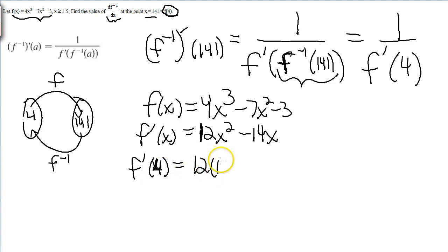12 times 16 minus 14 times 4. 12 times 16 is 192. 14 times 4 is 56, and 192 minus 56 is 136.